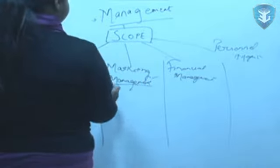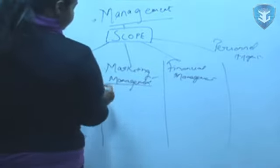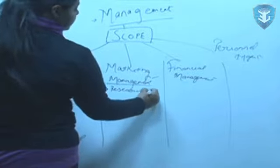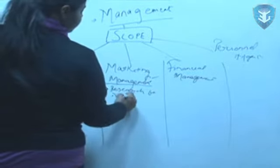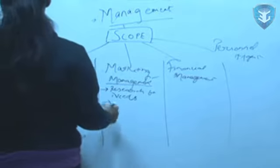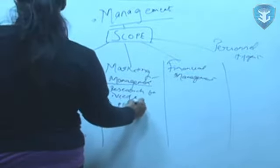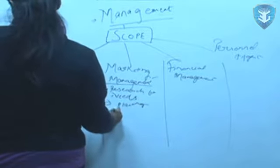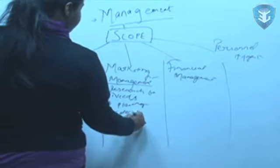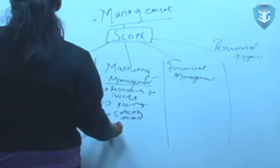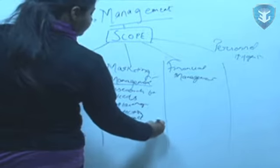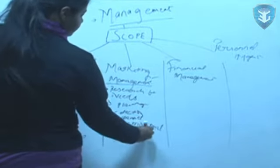Second is your marketing management. It includes research for needs means it is important first to know what the customer want and then go to the production step. Then is your planning, next is your selection channel means which channel you would be using for promoting your products and last is promotional act.